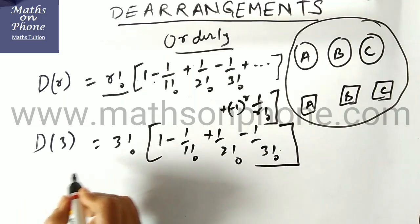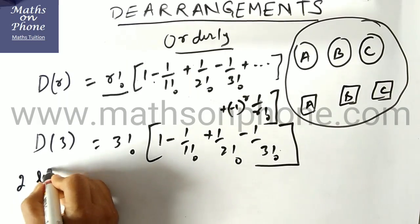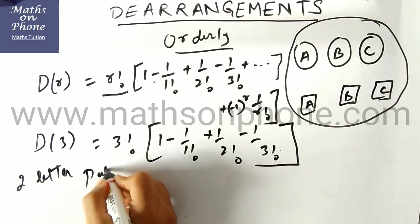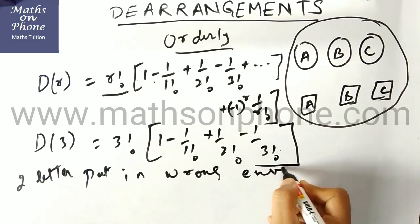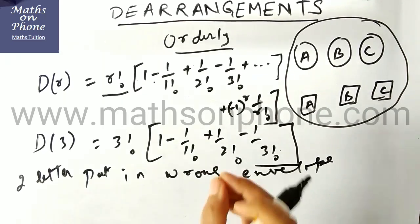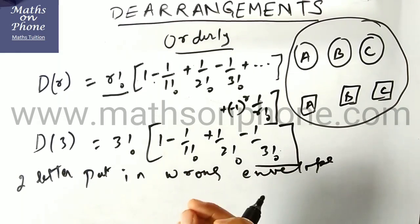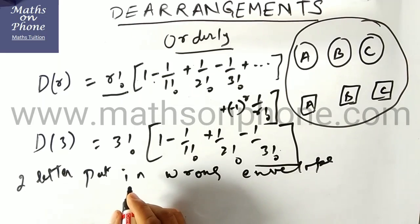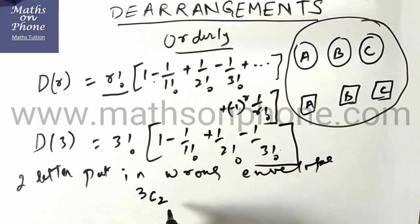Now I am just discussing one special case: just 2 letters put in wrong envelope. That means we need to find the derangement of 2 things. So firstly, we need to select which of the 2 letters are to be dearranged. This can be done in 3C2. 3 letters are there, out of which 2 letters are to be dearranged. So 3C2.